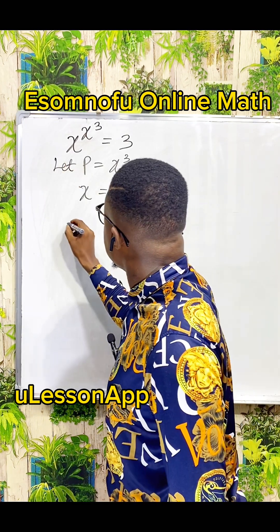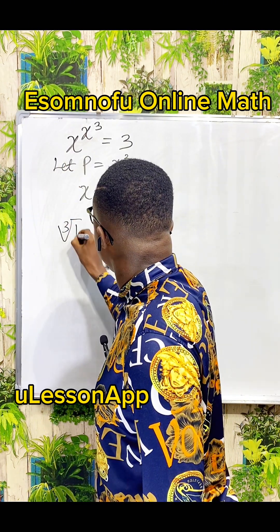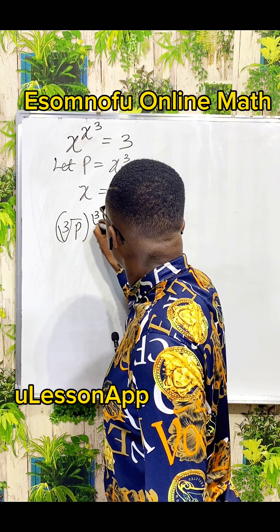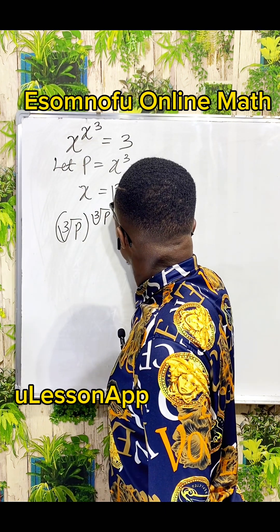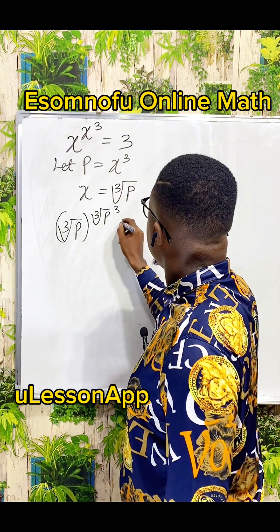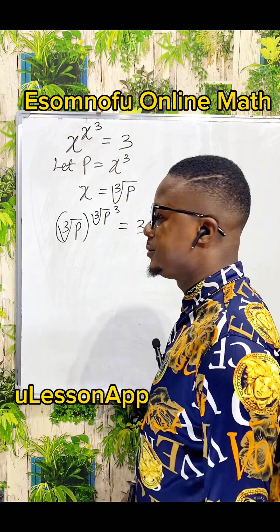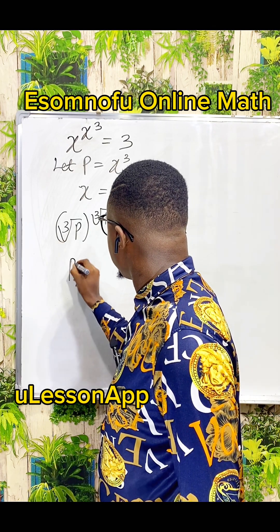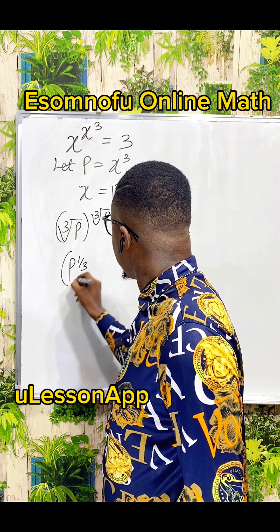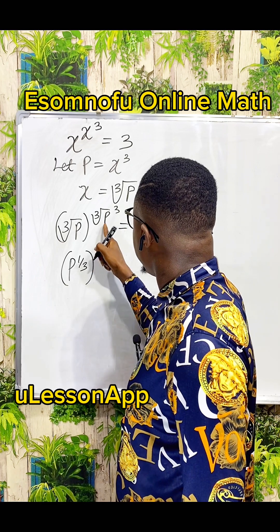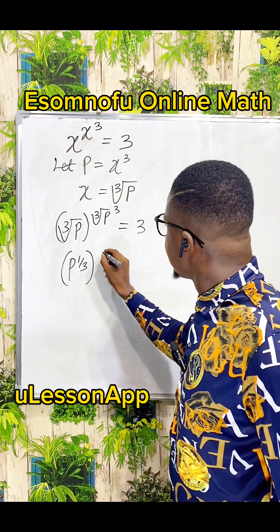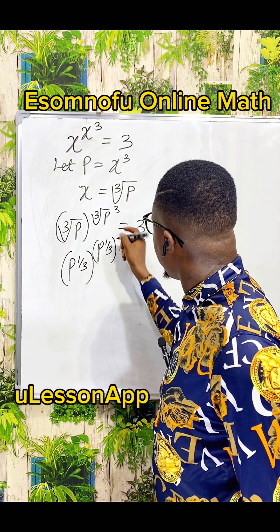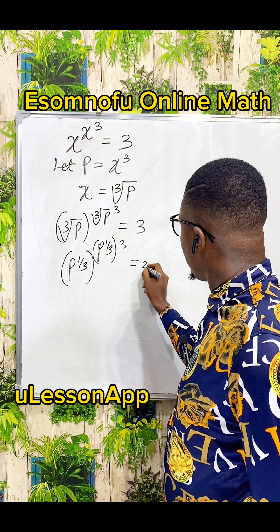So from here, the first x I will write as cube root of p to the power of x again. I will have cube root of p, then to the power of 3 that is there already. Everything is equal to 3. Now cube root of p is like saying p to the power of 1 over 3, raised to the power of p. This cube root of p again is the same thing as p to the power of 1 over 3, then raised to the power of this 3. Everything is equal to 3.